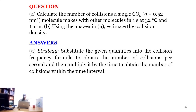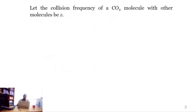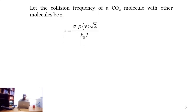Our first strategy for Part A is to substitute the given quantities into the collision frequency formula. This will enable us to obtain the number of collisions per second. Next, we multiply by the time to obtain the number of collisions within the time interval. Let the collision frequency of a single CO₂ molecule with other molecules be z (small letter z). Small z, representing the collision frequency of a single molecule with other molecules, is the product of the collision cross-section sigma and pressure.